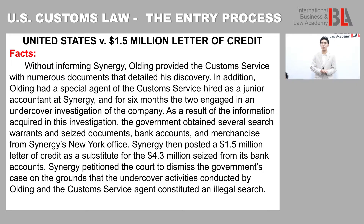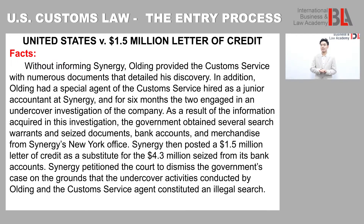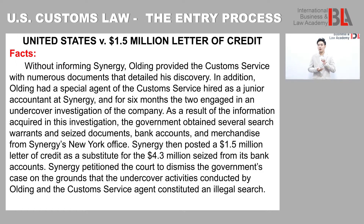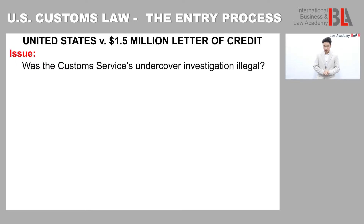Without informing Synergy, Olding provided the customs service with numerous documents detailing his discovery. In addition, Olding had a special agent of the customs service hired as a junior accountant at Synergy, and for six months the two engaged in an undercover investigation of the company. As a result of the information acquired in this investigation, the government obtained several search warrants and seized documents, bank accounts, and merchandise from Synergy's New York office. Synergy then posted a 1.5 million letter of credit as a substitute for the 4.3 million seized from its bank account. Synergy petitioned the court to dismiss the government's case on the grounds that the activities conducted by Olding and the customs service agent constituted an illegal search.